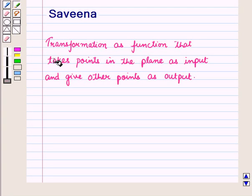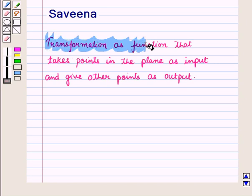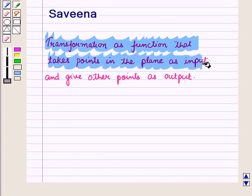Hello and welcome to the session. Now in level 1, under the topic similarity and transformation, we have discussed the various types of transformations: translation, reflection, rotation, and dilation. In this session we will see that the transformation acts as a function that takes points in the plane as input and gives other points as output.